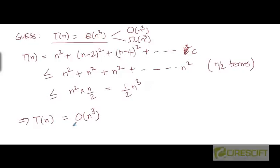The question is: is this a tight upper bound? It's possible that T(n) could be, say, a quadratic expression in n, in which case it would certainly be O(n³) but also O(n²). To determine tightness, we need to also prove that T(n) is Big-Omega of n³. If that holds, then our upper bound is in fact a tight bound.